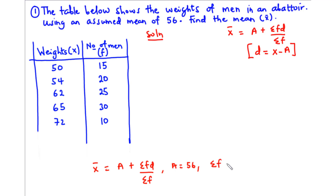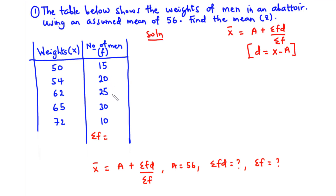We don't yet know Σfd or Σf, so we need to find both. From the frequency column, Σf means we add up all the frequency values: 15 + 20 = 35, 35 + 25 = 60, 60 + 30 = 90, and 90 + 10 = 100. So the sum of frequency is 100.